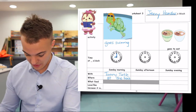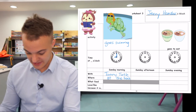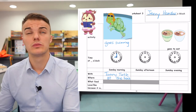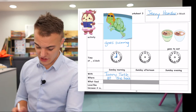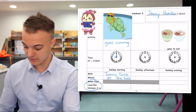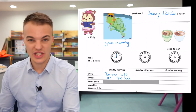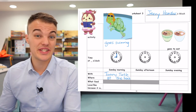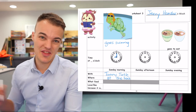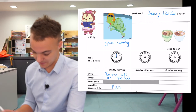The last part says she likes it because it is something. So why does Jenny Hamster like swimming? I think she likes it because it is fun. So I can write fun in the last box.